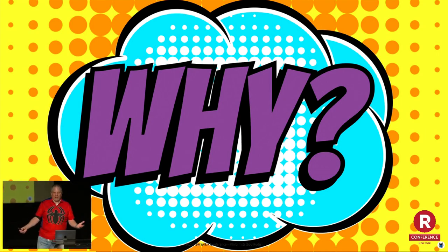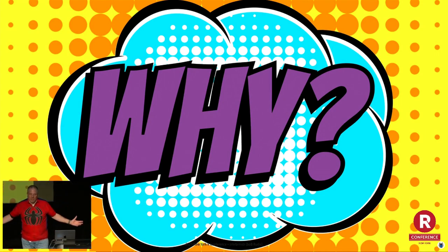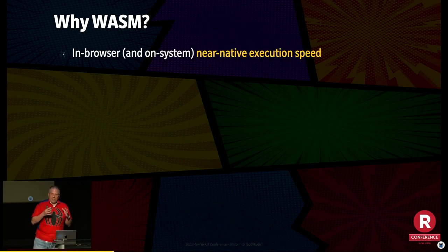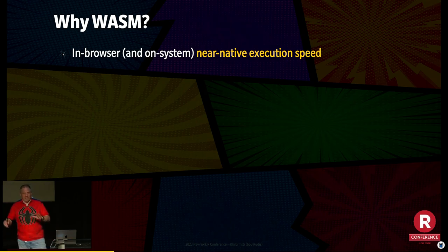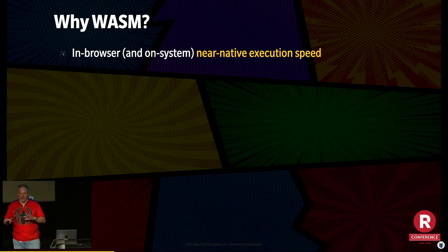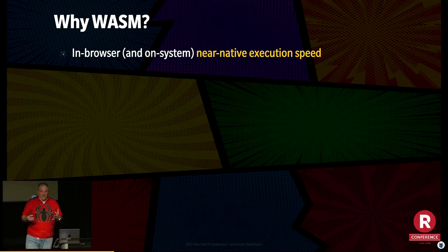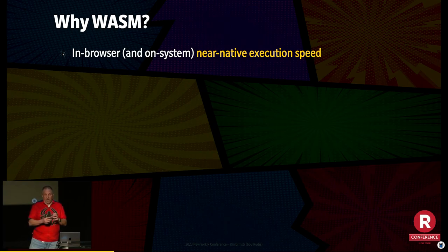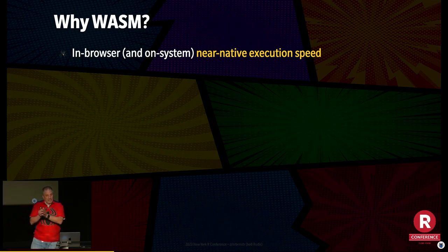Why does WebR use WASM? It gives you in-browser and on-system execution — we're not going to talk about the on-system stuff today, find me after. It gives near-native execution speed. JavaScript isn't slow, but it isn't as fast as actually running at near-native speed. WASM gets you almost the speed of running executable code on any endpoint in a browser. It's not perfect, but it's really close and a lot closer than native JavaScript.